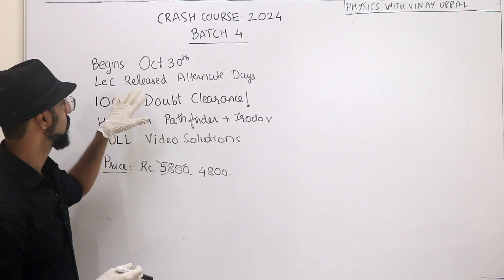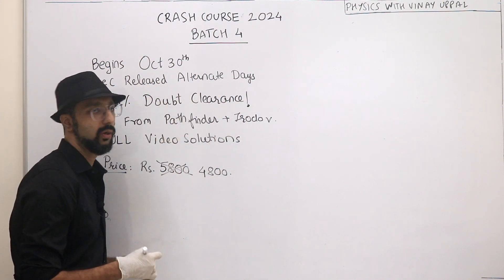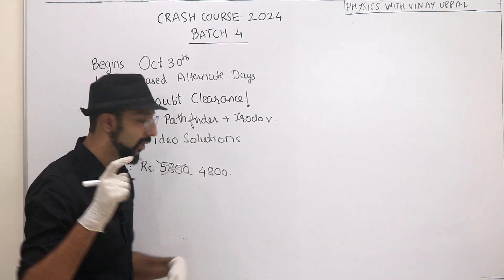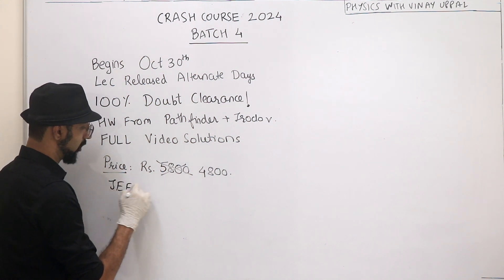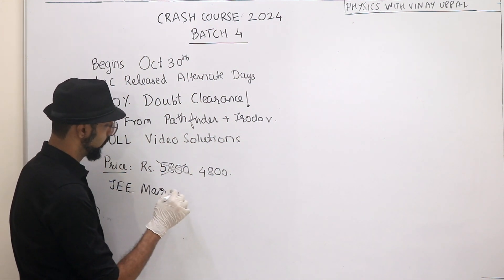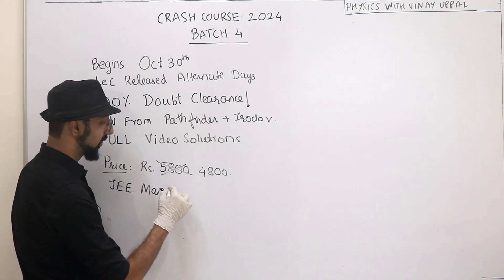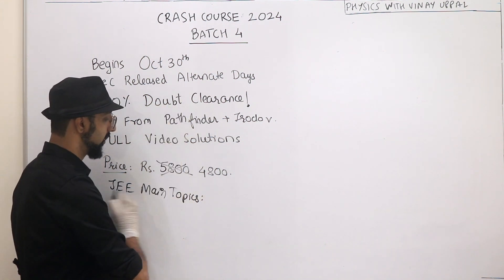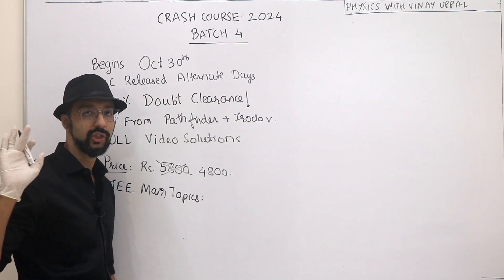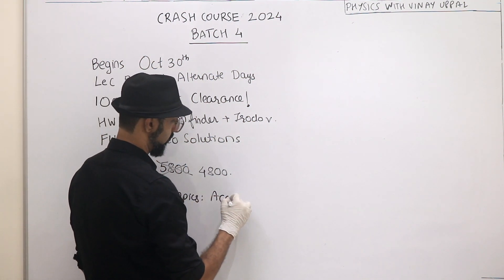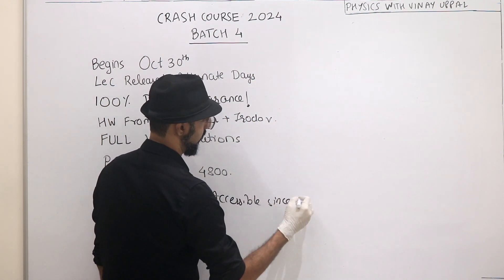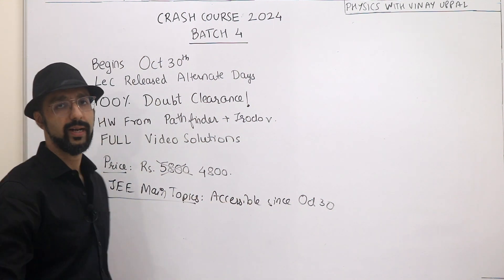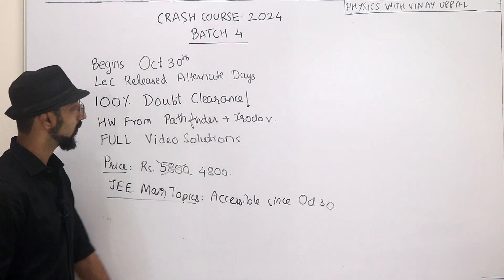In Batch 4 crash course the lectures will be released on alternate days and we'll finish around December 3rd week. One more thing: JEE Main topics, because JEE Main is coming in 3 months time, so JEE Main topics are all accessible from the very first day. From October 30th I've made all JEE Main topics accessible so you can watch any of that if you want, like magnetic properties of matter, semiconductors, etc.